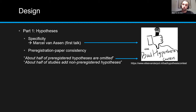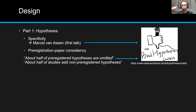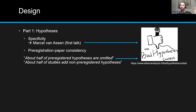What we found was that about half of the pre-registered hypotheses were omitted — they were there in the pre-registration, but no longer in the accompanying paper. We also found that about half of the studies added non-pre-registered hypotheses without specifying explicitly that they were exploratory. We call those 'added hypotheses.' However, we have to take into account that the quality of hypotheses in both pre-registrations and papers is rather low, which may have skewed our results slightly.